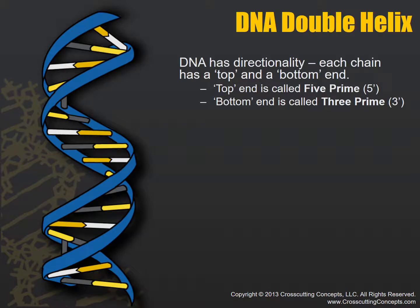Let's look at the double helix. DNA has directionality — each chain has a top end and a bottom end. The top end is called the five prime and the bottom end is called the three prime. It's based on numbering the carbons on the deoxyribose sugar, starting at the top and moving in a clockwise direction. So the five prime being the top means it's the fifth carbon in the chain, and the three prime being the bottom means it's the third carbon in the chain.